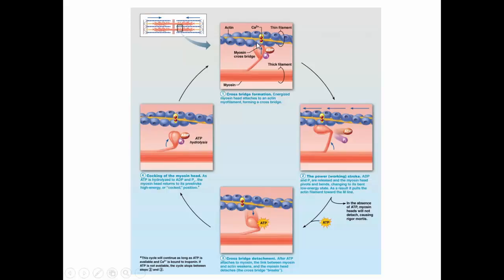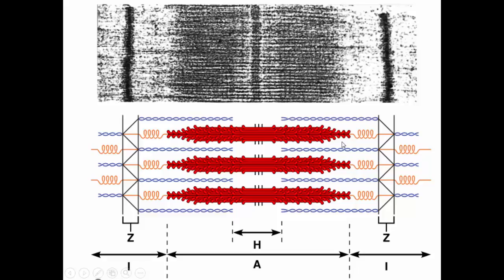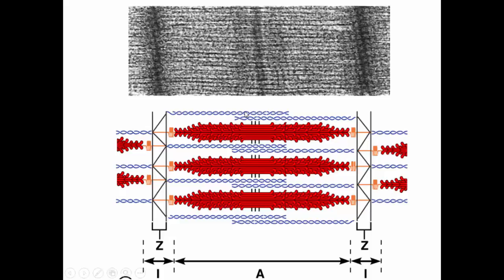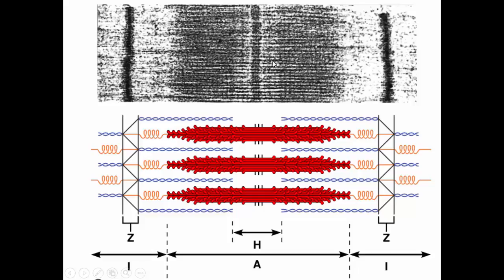This process will continue as long as calcium is present to keep those myosin binding sites open and as long as there is adequate ATP to break the cross-bridge and re-cock the myosin heads. Cross-bridge formation, the power stroke pulling actin toward the midline, and detachment with re-cocking will repeat as long as both calcium and ATP are available. We can see a relaxed muscle and a contracted muscle — the actin molecules have slid together and we've lost some of the banding seen in the relaxed state.